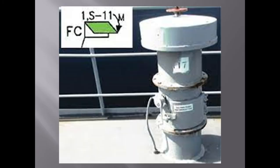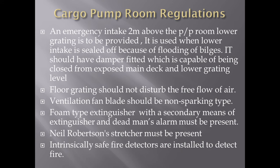We have a damper on the ventilation fan. An emergency intake, two meters above the pump room lower grating, is to be provided. We have a normal suction and also an emergency suction, which is used when the lower intake is sealed off because of flooding of bilges. This emergency suction should have a damper capable of being closed from the exposed main deck and from the lower grating level. The floor grating should not disturb the free flow of air.